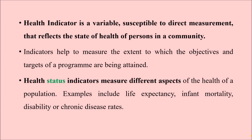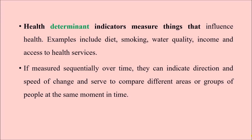We can have different types of health indicators for different aspects of health. Health status indicators measure the health status of people — for example, life expectancy, infant mortality, disability rates, or chronic disease rates. Health determinants indicators, as the name suggests, tell us about different determinants or factors that influence health — for example, diet, smoking, water quality, income, socioeconomic status, and access to health services.